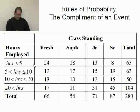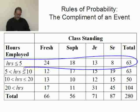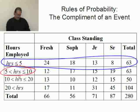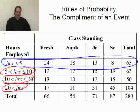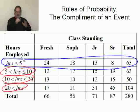Likewise, if event A is they work less than or equal to five hours, then the other row categories are mutually exclusive as well. All the rows would be mutually exclusive — there's nobody who worked between 10 and 20 hours and also less than five. It's one or the other; there's no overlap.